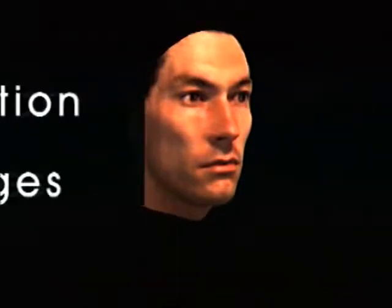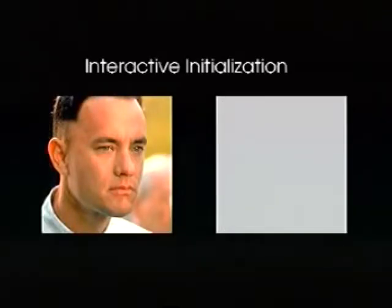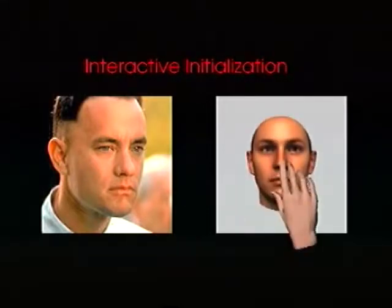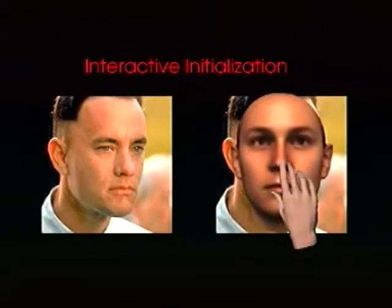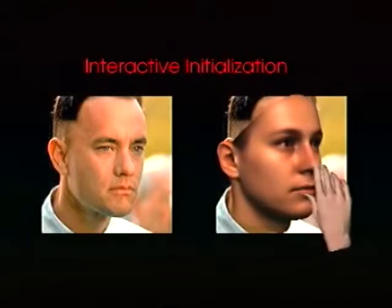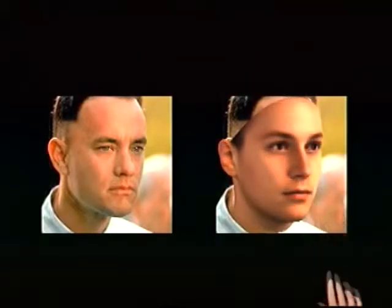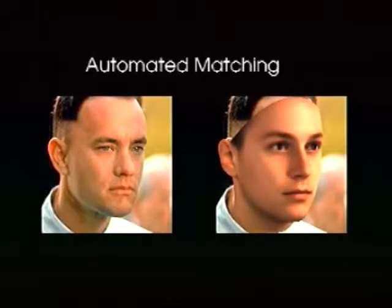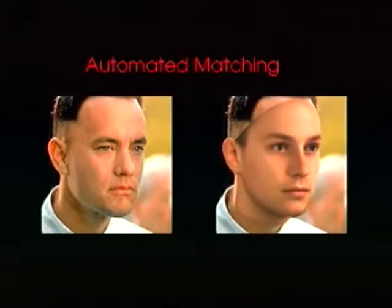We now reconstruct 3D shape and texture in order to animate a face, given only a single photograph of a person. First, we manually align the average face to the target image, roughly estimating position, size, orientation, and illumination. Then, a fully automated algorithm finds the best reconstruction of the face within the morphable model.